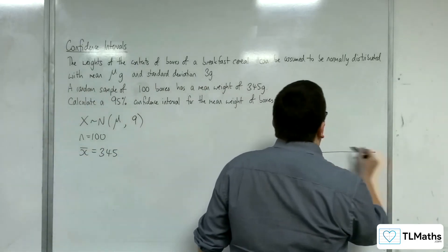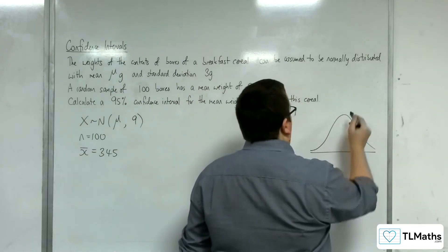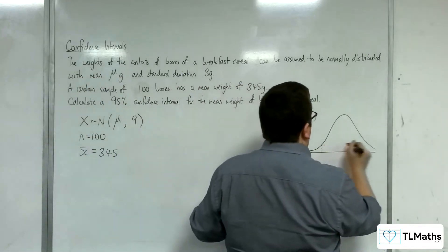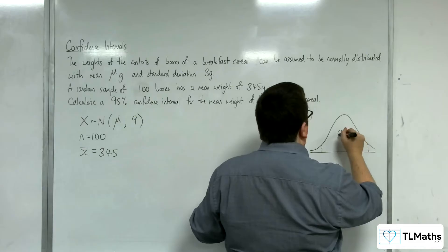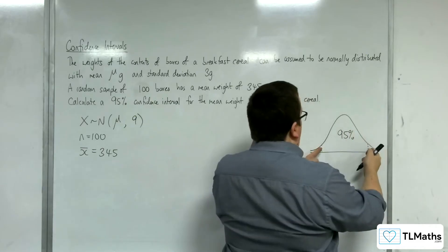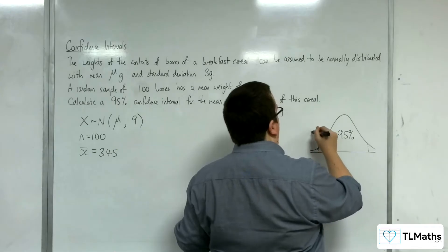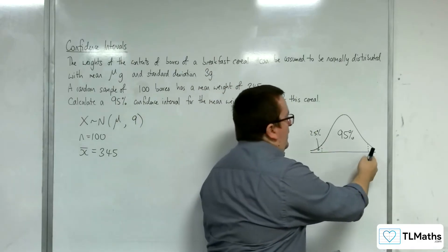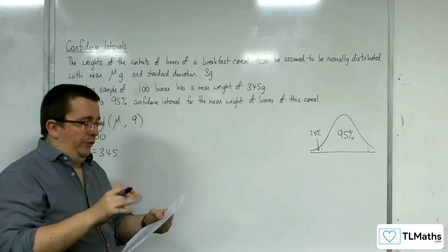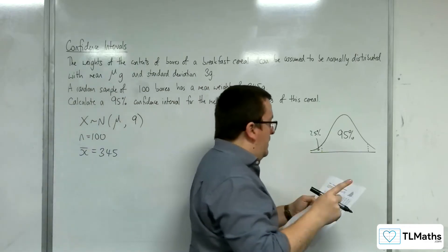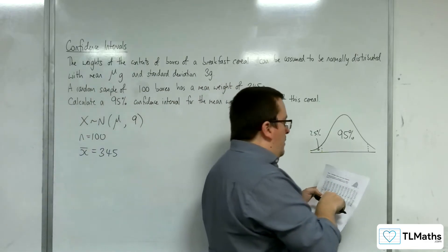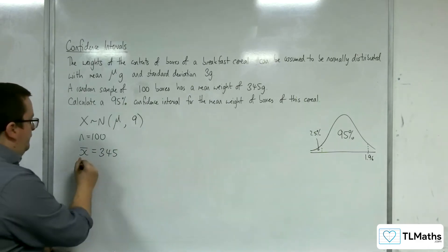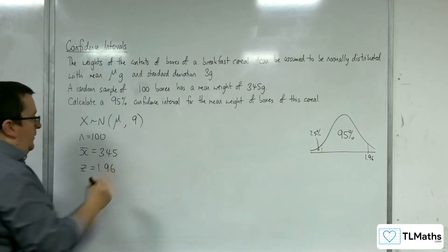Here's my distribution. I need a 95% confidence interval. Between these two z values, I need this to be 95%. So the two tails add up to 5%, meaning each tail must be 2.5%. So I can look up 97.5% to get that z value. Looking on table 2 for 0.975, that gives 1.96. So z is 1.96.